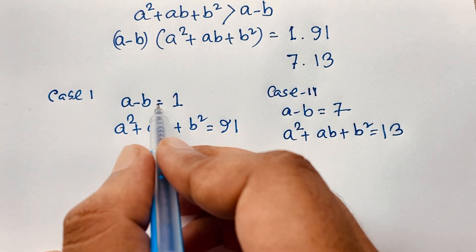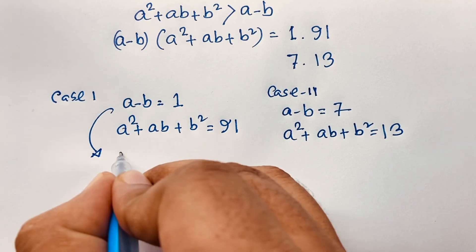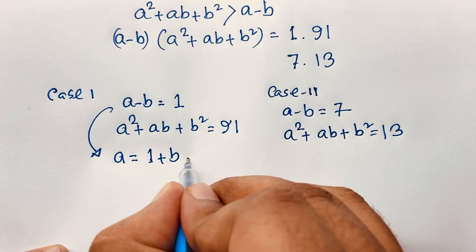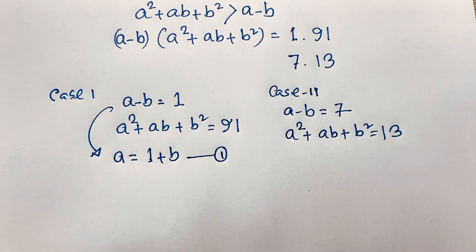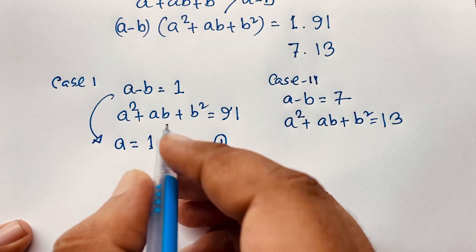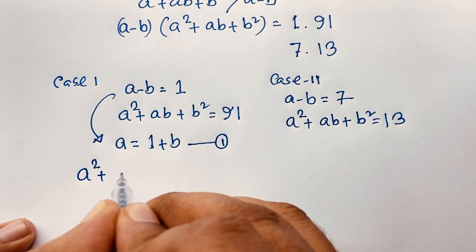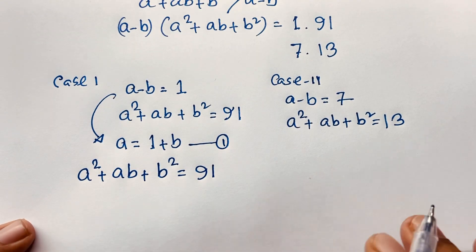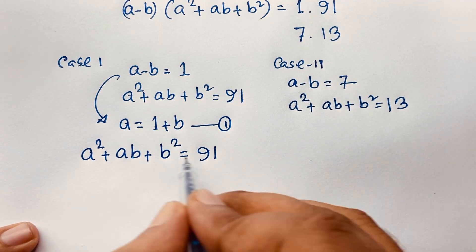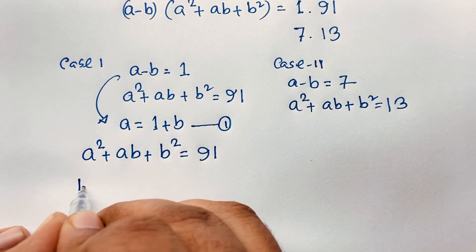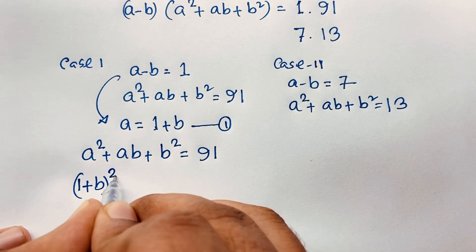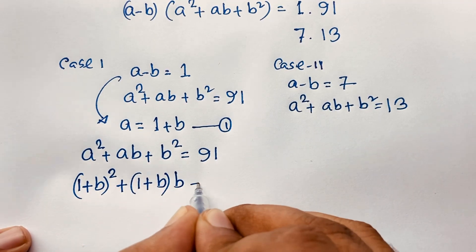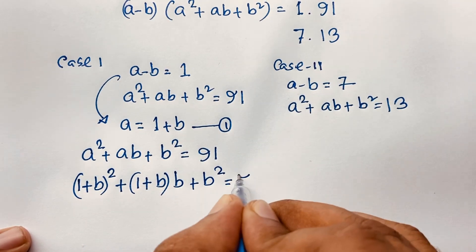For Case 1, from a minus b equals 1 we get a equals 1 plus b. Substituting into the second equation: (1 plus b)² plus (1 plus b)·b plus b² equals 91.